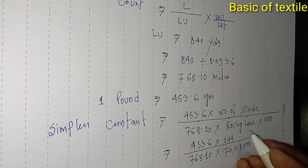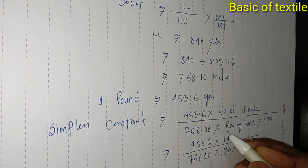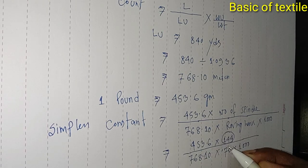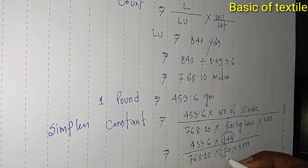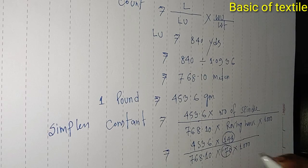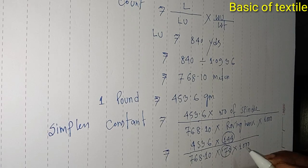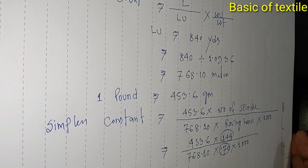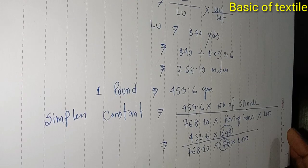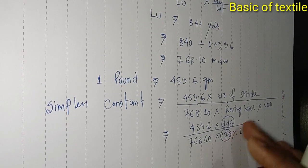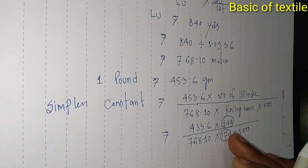Thornilam changeable: Number of Spindles and Roving Hank are the changeable values. We can set and fix the constant. Number of Spindles is fixed.